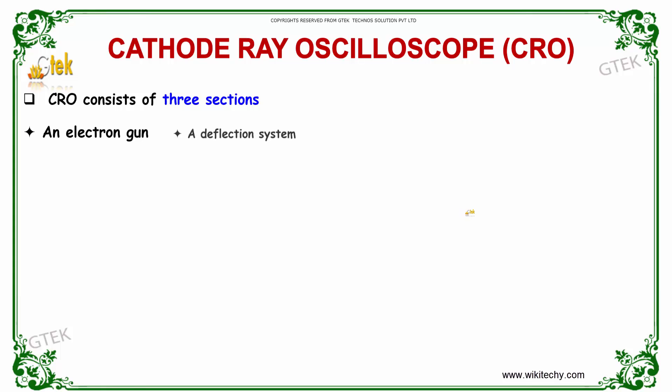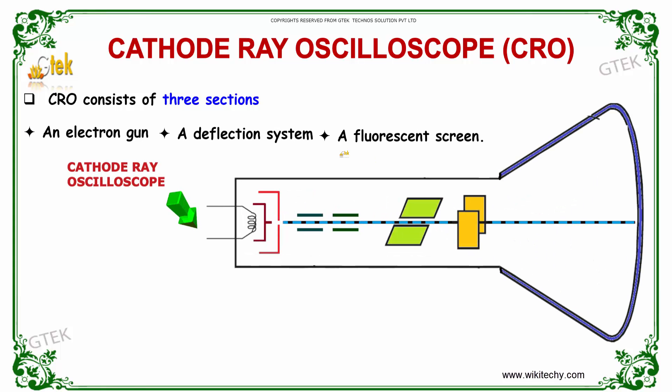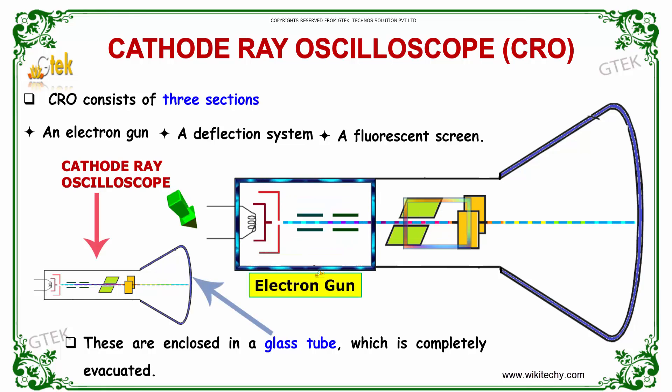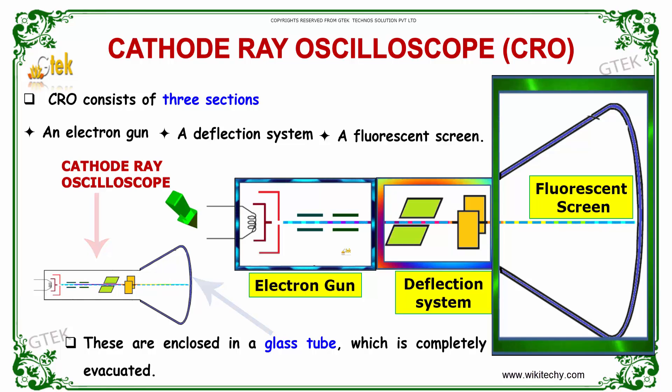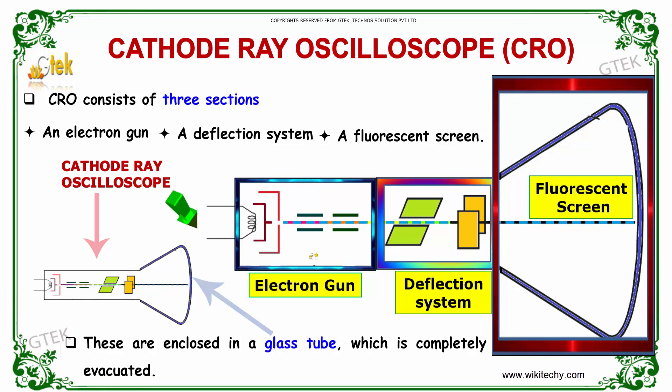So this cathode ray oscilloscope is having three sections. The first one is electron gun, second one is deflection system and you can see here the fluorescent screen. So these are the regions which have been divided as three sections. These are enclosed in a glass tube which has been completely evacuated.